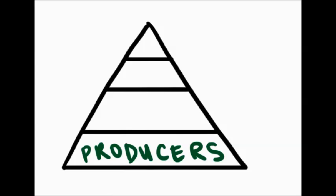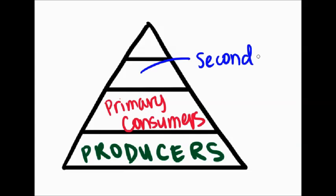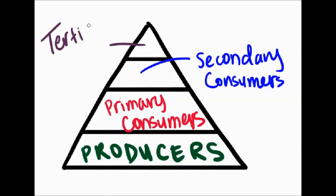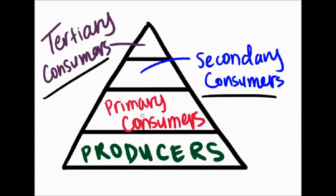The word trophic is in reference to a food chain. A food chain is a linear sequence that shows which organisms consume which other organisms. Each link, or level in this food chain, is referred to as a trophic level, hence the word trophic.